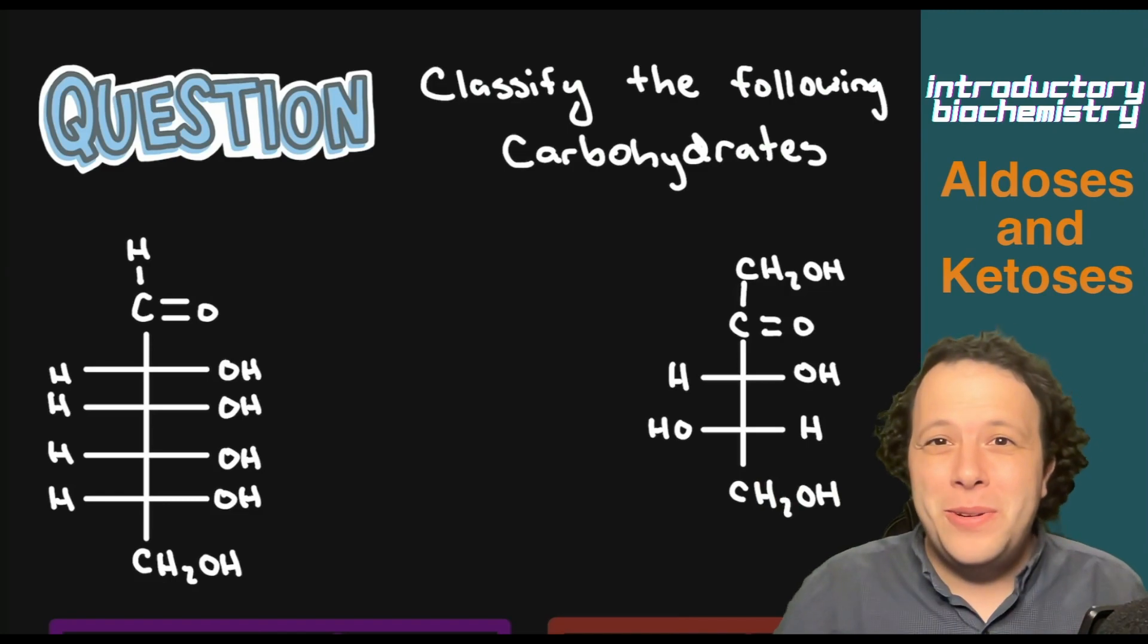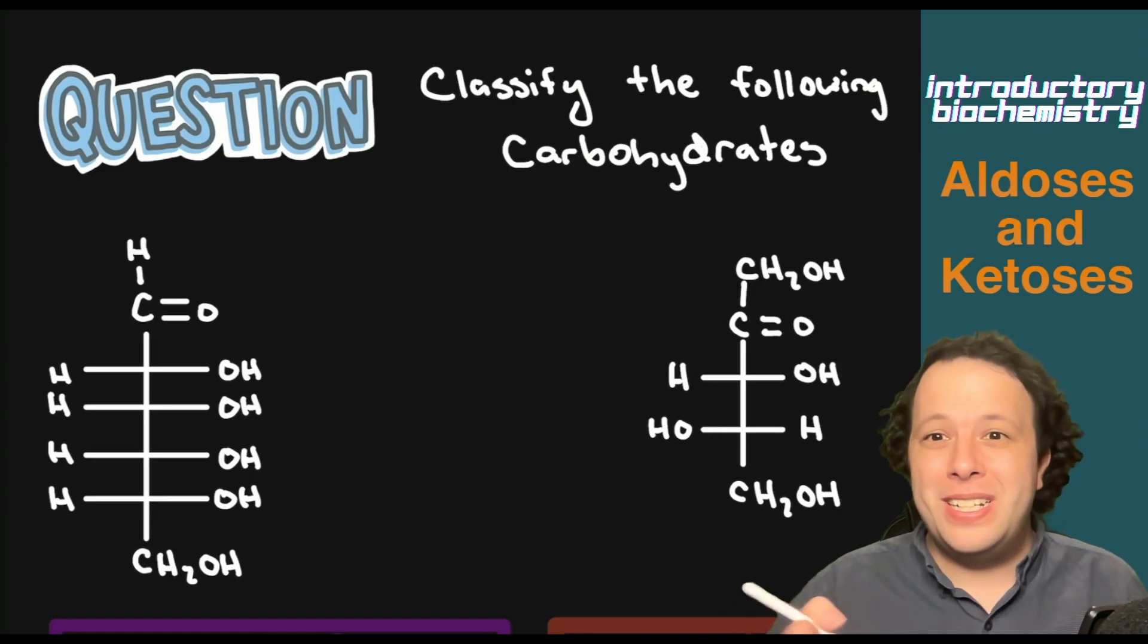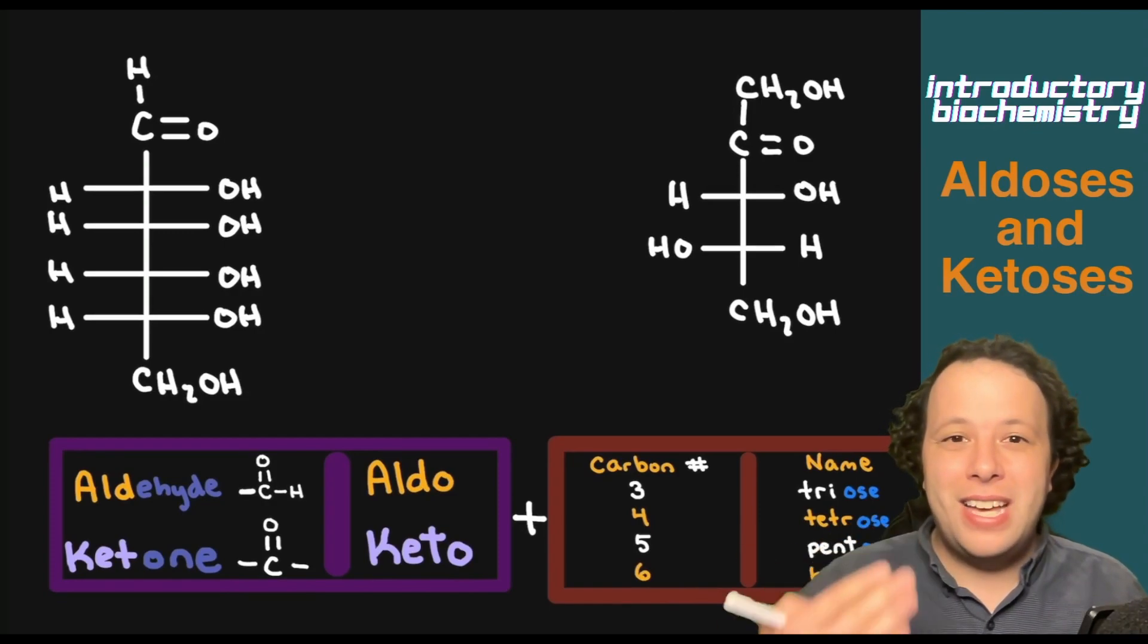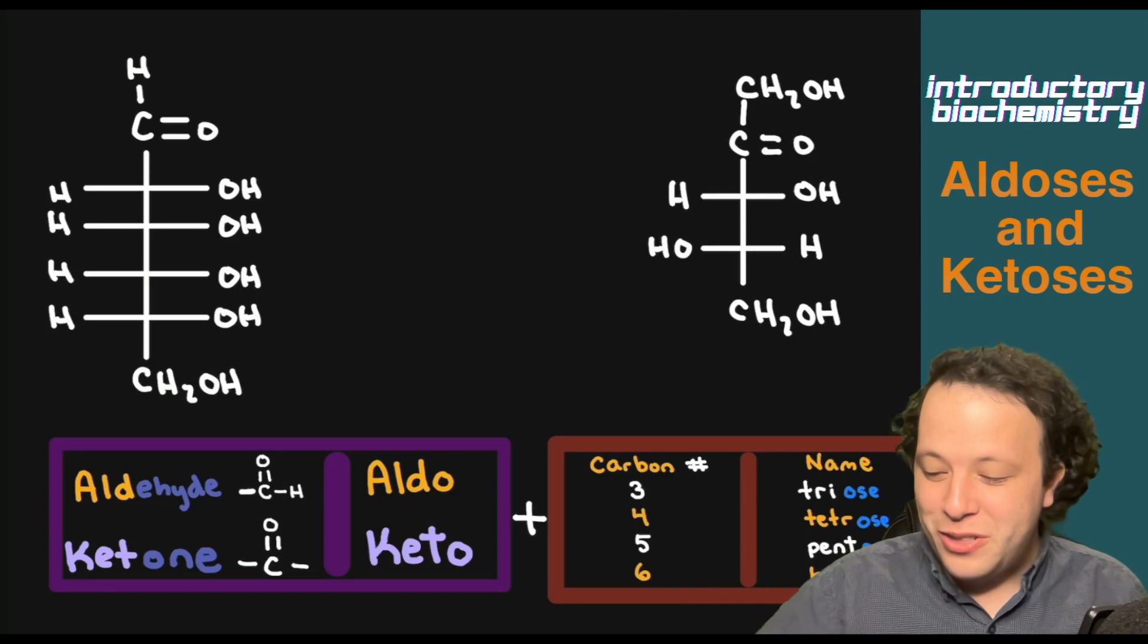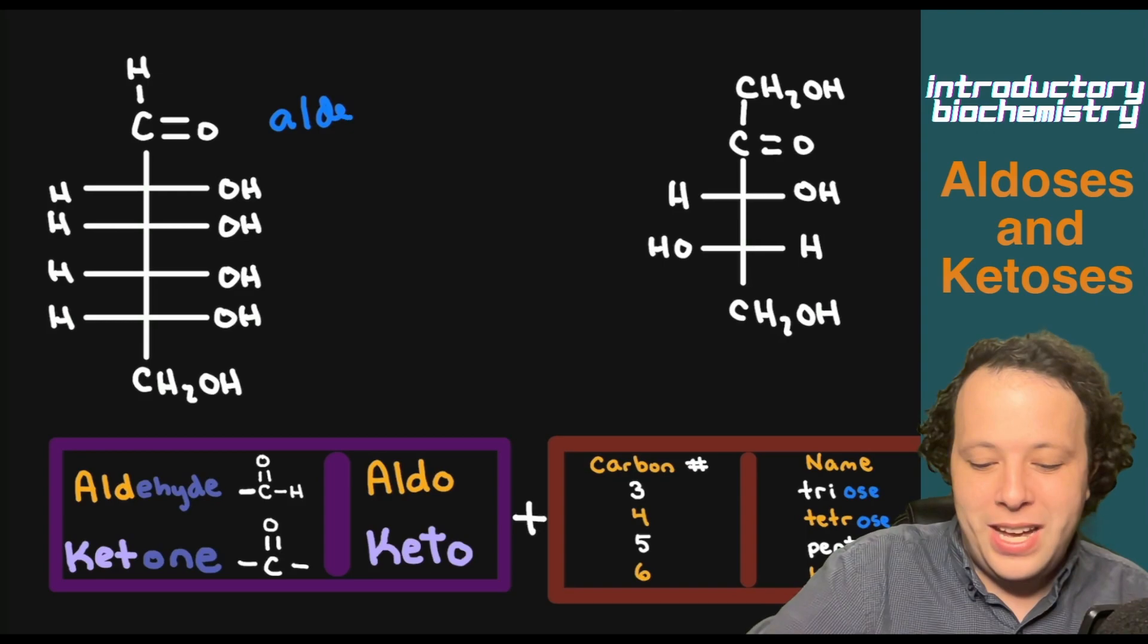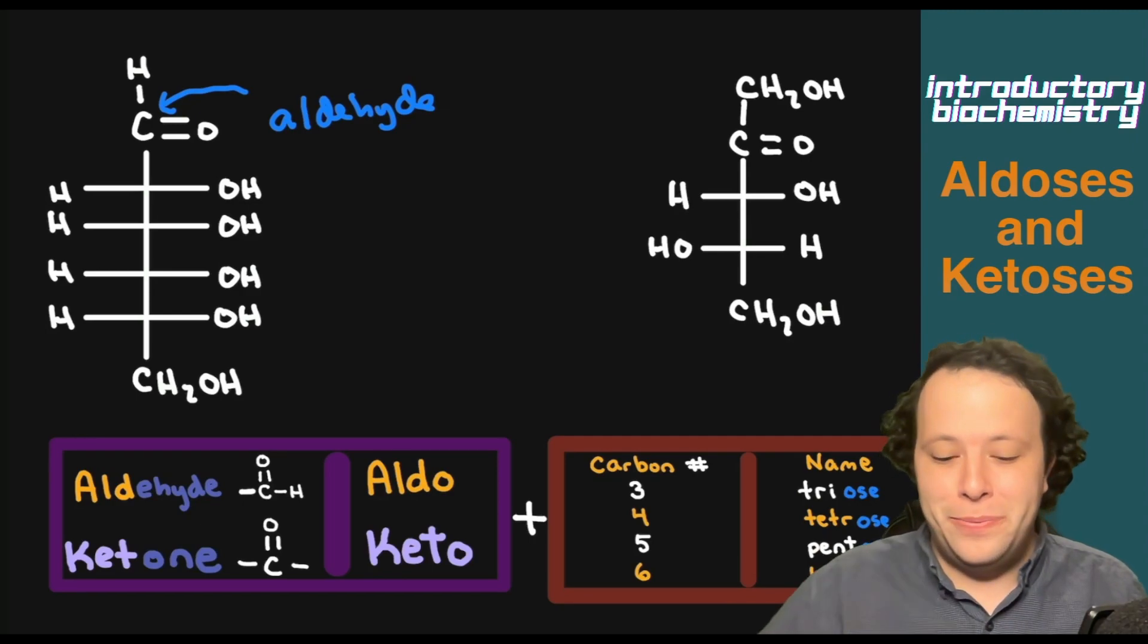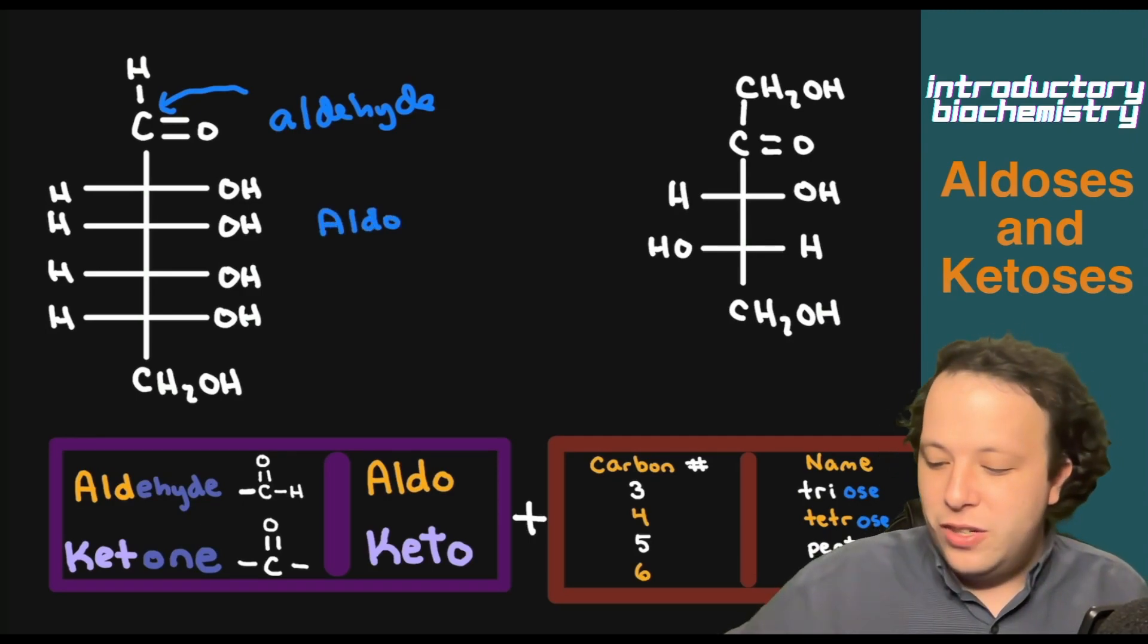With the following questions, we're going to classify the following carbohydrates. So we're going to go through our steps, step one plus two, putting our two things together. So the very first step is that we need to count and classify what our functional group is. So on the structure on the left, we can see that we have an aldehyde, right? Because we are looking right here on carbon number one, we see that C double bond O.